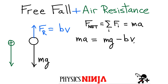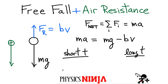Let's look at the limiting cases again — short time and long time. Initially, if we just drop the object, the initial velocity equals zero, so the entire Bv term goes away. That means the acceleration is simply the acceleration due to gravity. In the short time limit, this behaves very similarly to your standard free-fall problem.